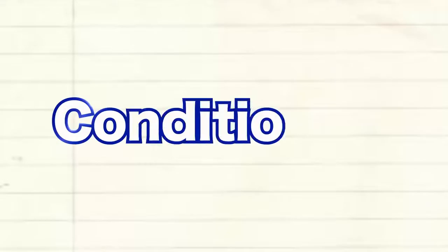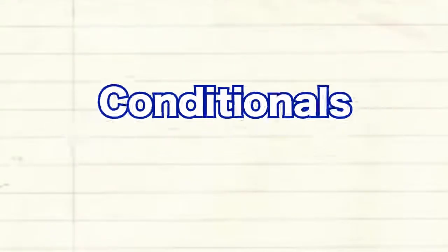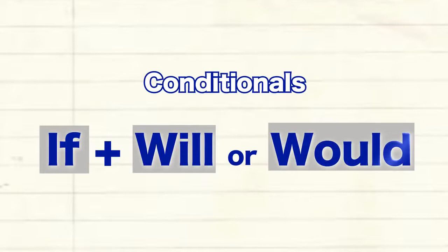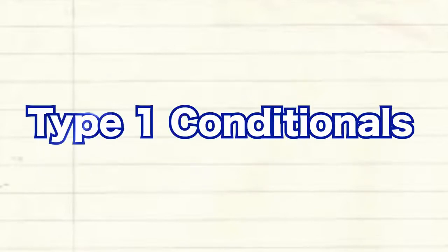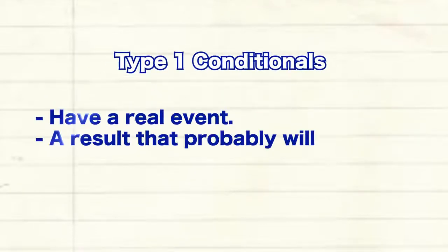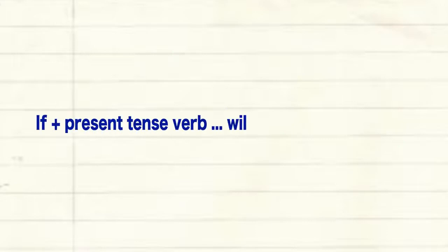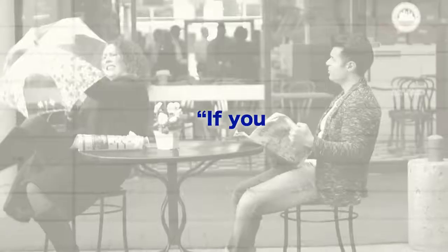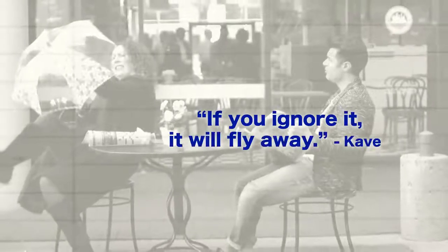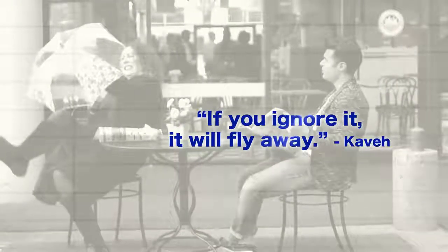In this lesson you can learn about conditionals. They have 'if' and 'will' or 'would.' There are two kinds of conditional sentences in this lesson. Type 1 conditionals have a real event and a result that probably will happen — chances are good. Here is the pattern: if + present tense verb, will + future tense verb. Kave uses this when he says, 'If you ignore it, it will fly away.'